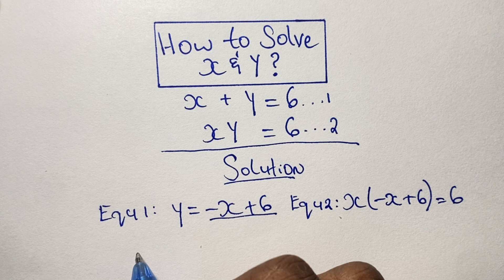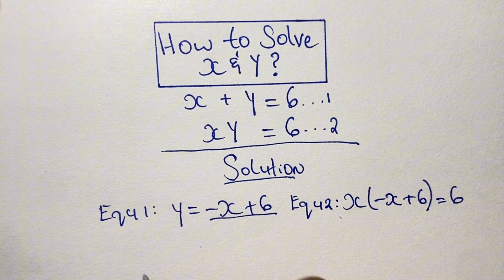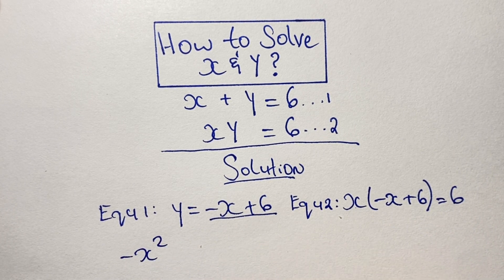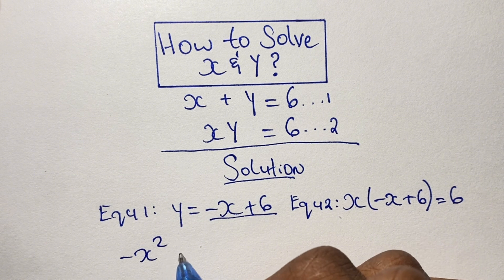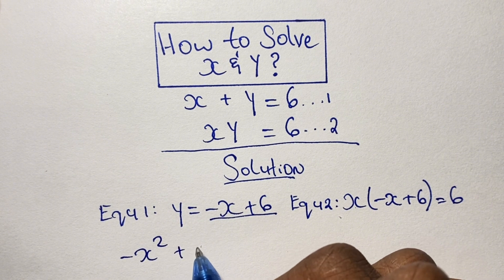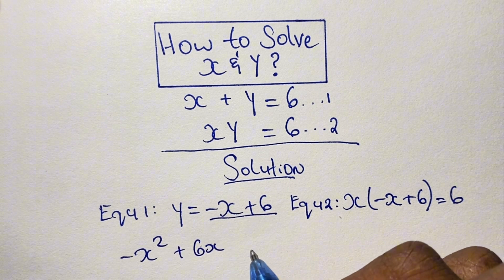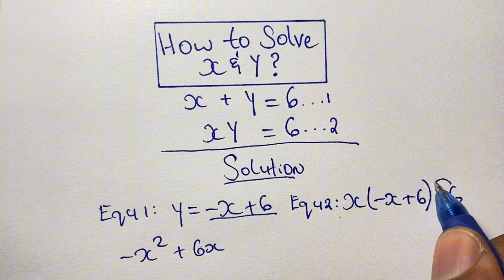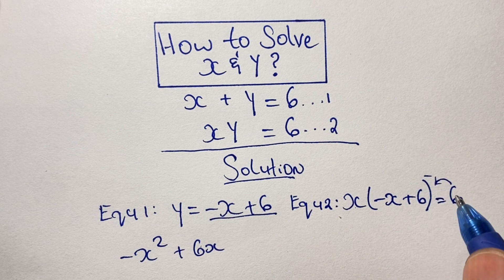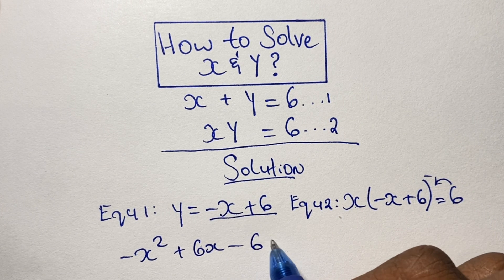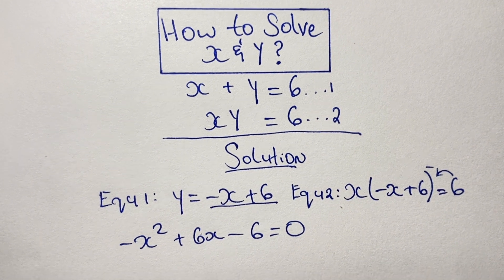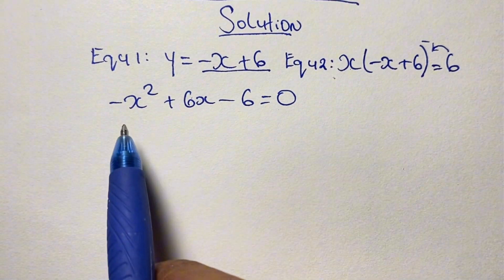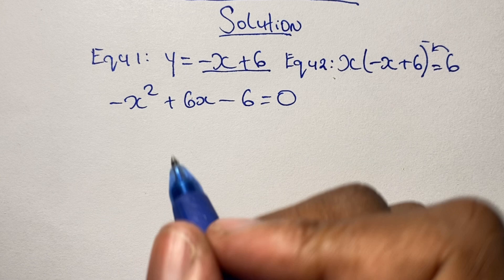We expand the brackets: x times negative x gives negative x squared, and x times positive 6 gives positive 6x. From here in equation 2, we subtract 6 from both sides of the equation, so the right side becomes 0 and on the left we have negative 6. This gives us negative x squared plus 6x minus 6 is equal to 0.